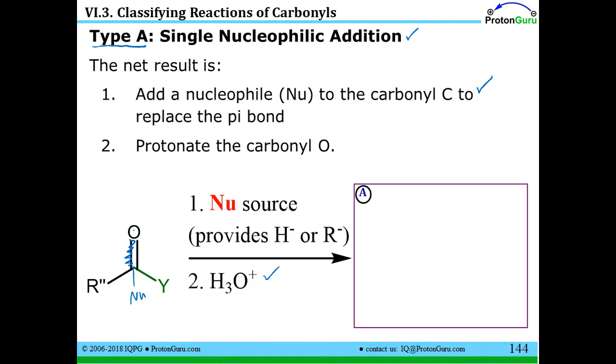Pi bond's not there anymore, but you've pushed the charge on the O. So if you add an acid like I do in step two, I'm just going to protonate it. That way, your net result is that you have this scaffold that was from the carbonyl. You've added the nucleophile, and then you've protonated. That's the type A reaction.